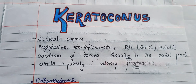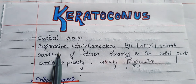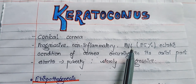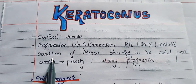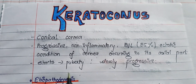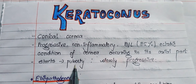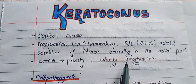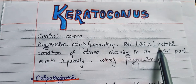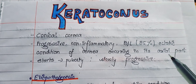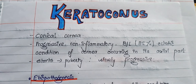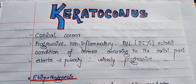According to the definition, keratoconus is a progressive non-inflammatory bilateral ectatic condition of the cornea occurring in its axial part. It starts at puberty and progresses slowly. Here, ectatic refers to the dilatation or distension of a tubular structure.